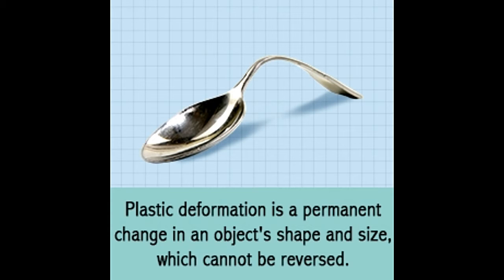Deformation is a change in the shape and size of an object, usually caused when pressure or heat is applied on it. While this term is mostly used for metals and thermoplastics — recyclable polymers — many other materials can undergo such changes, including bones, concrete, and even rocks. Indeed, the phenomenon of deformation has played a vital role in shaping our planet, as its rock structure was sculpted over billions of years under enormous pressure.